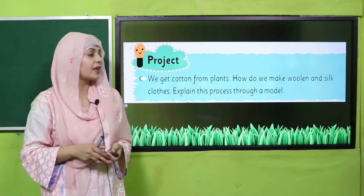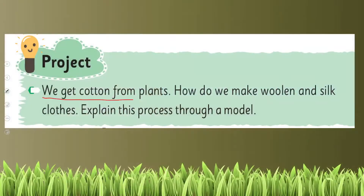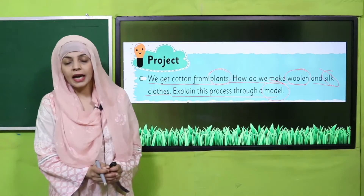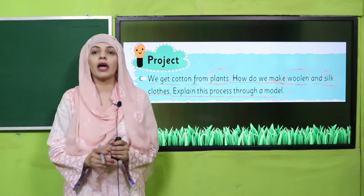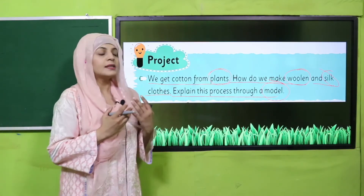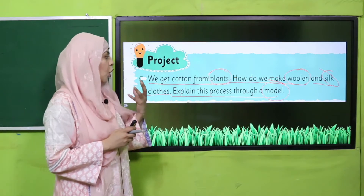So here is your project. Project mein kya aur kis tarikay se banana hai? We get cotton from plants. How do we make woolen and silk clothes? Explain this process through a model. Aaj hamne ek model making karni hai jis ke liye aapko mukhtalif materials use karna hoga.